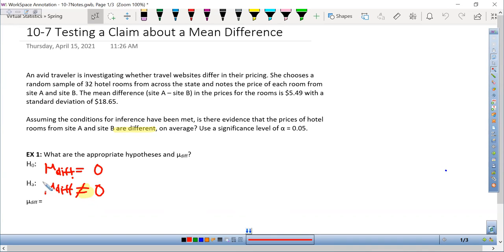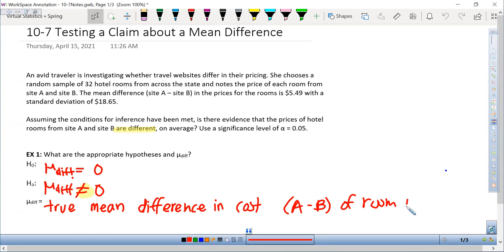Remember that mu sub diff is the true mean difference in costs if we're doing A minus B of room prices. So they're different means not equal.